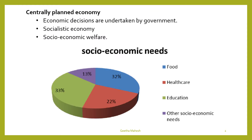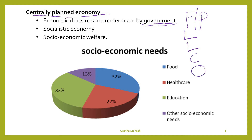The first one is centrally planned economy. In a centrally planned economy, all economic activities are owned and controlled by government. All factors of production — land, labor, capital, and organization — are under the control of government. So here government is going to take all economic decisions. This centrally planned economy is also called a socialistic economy.